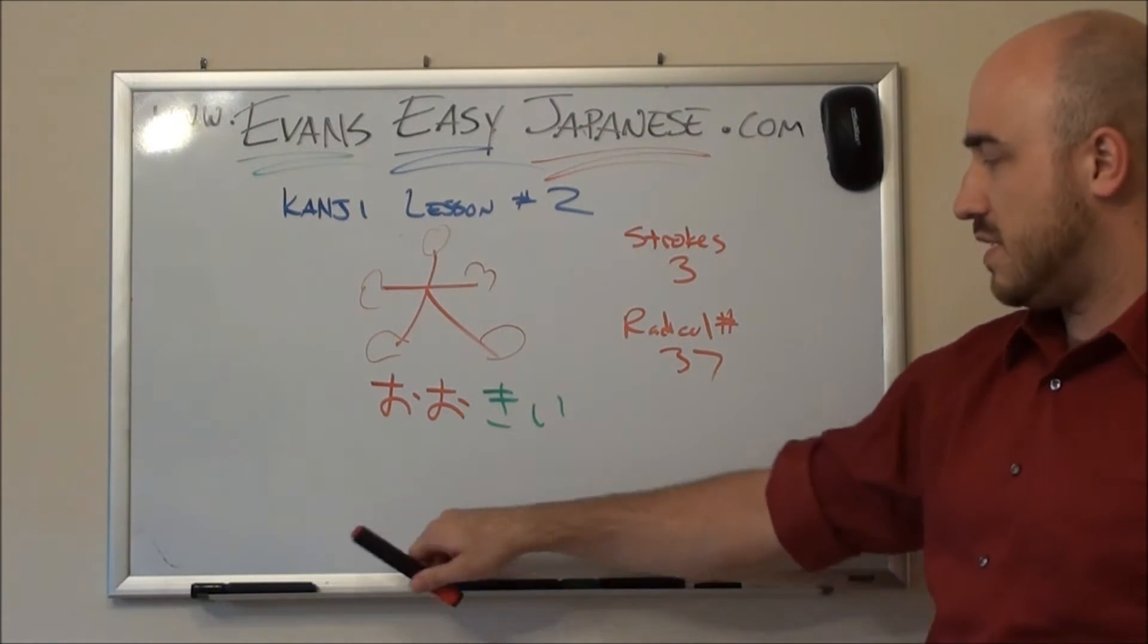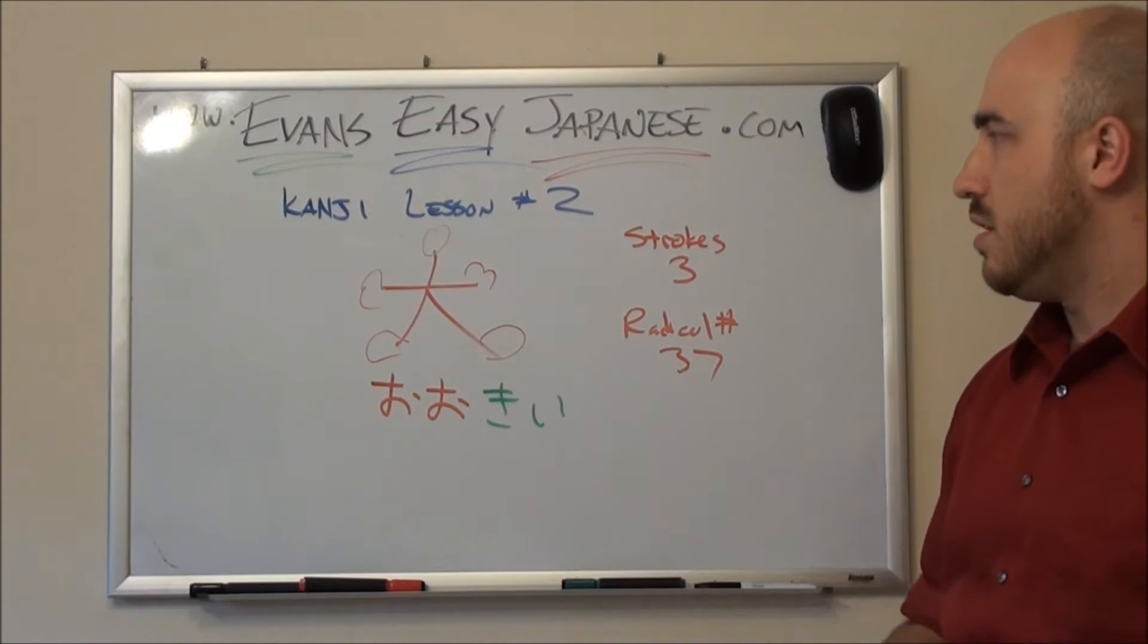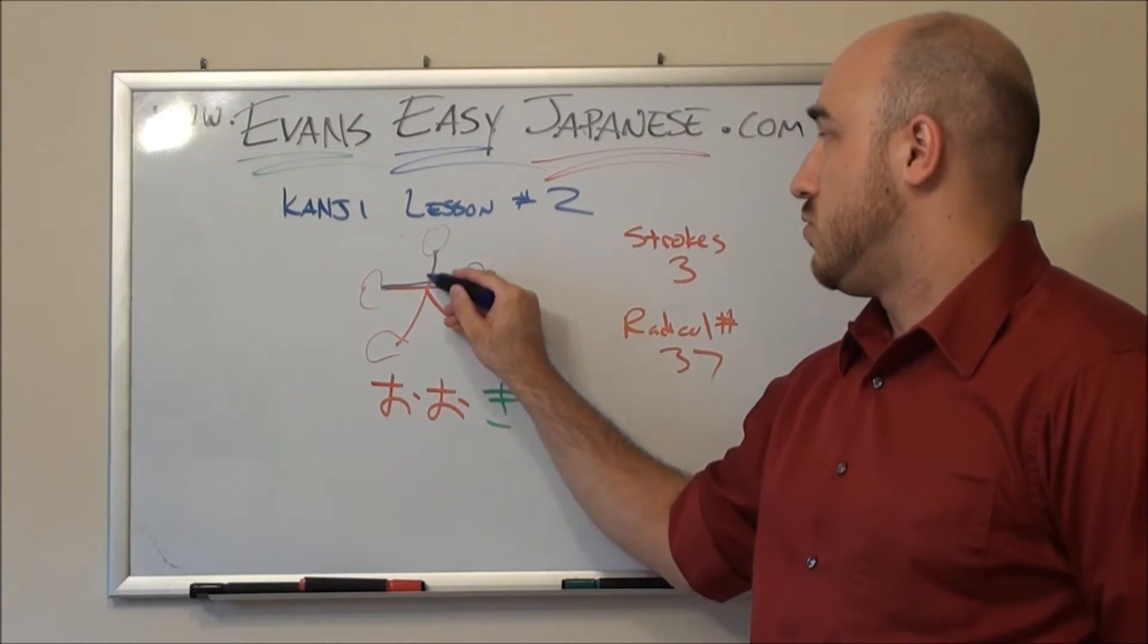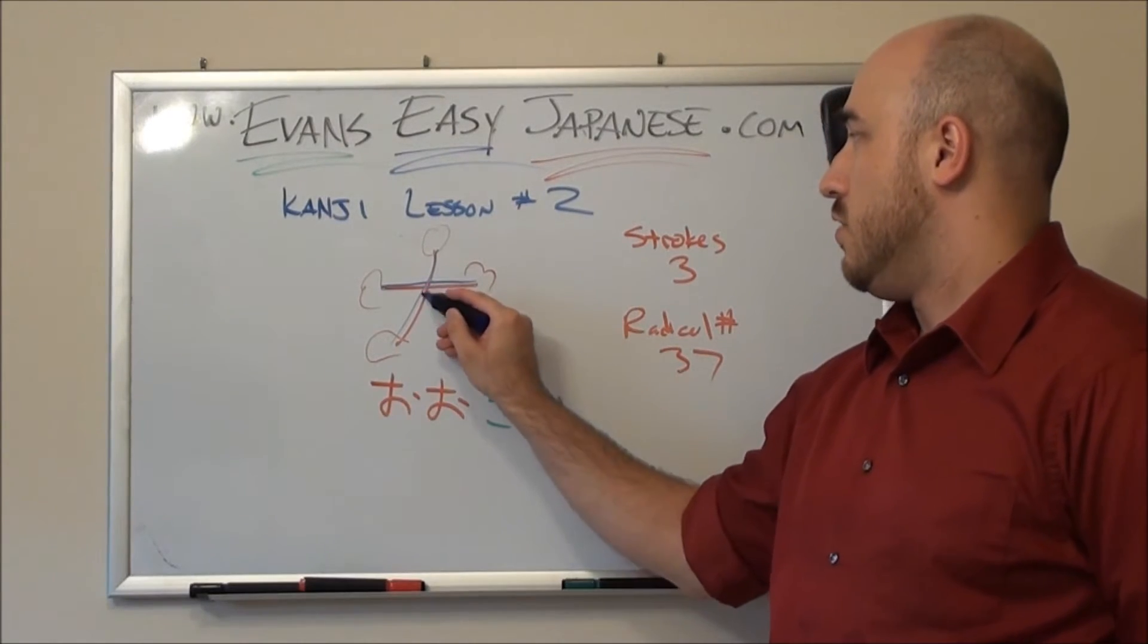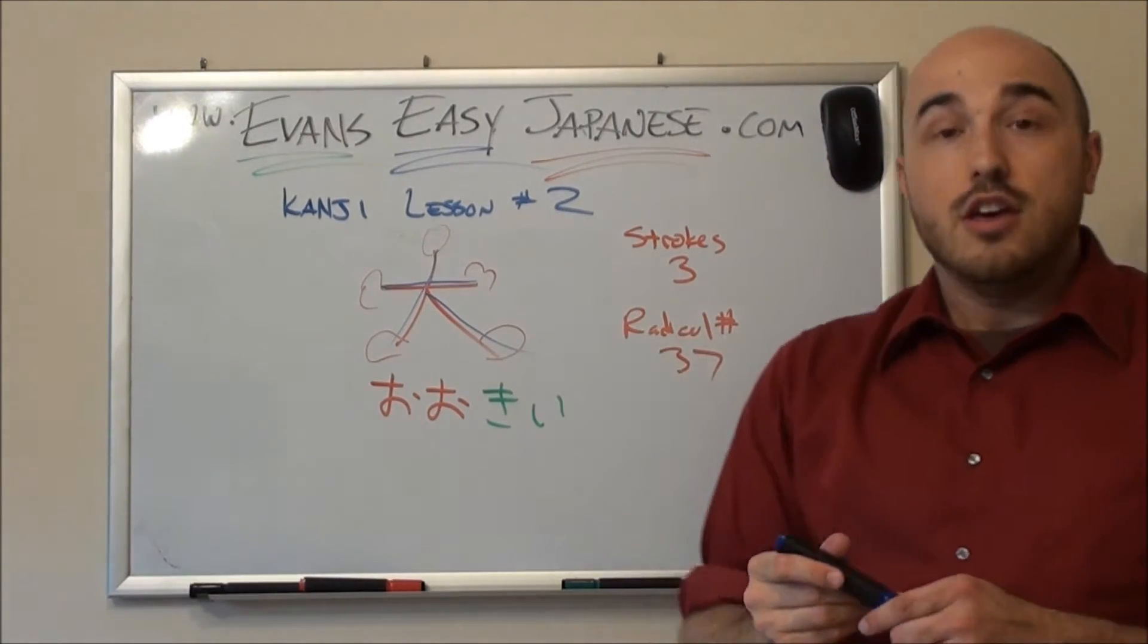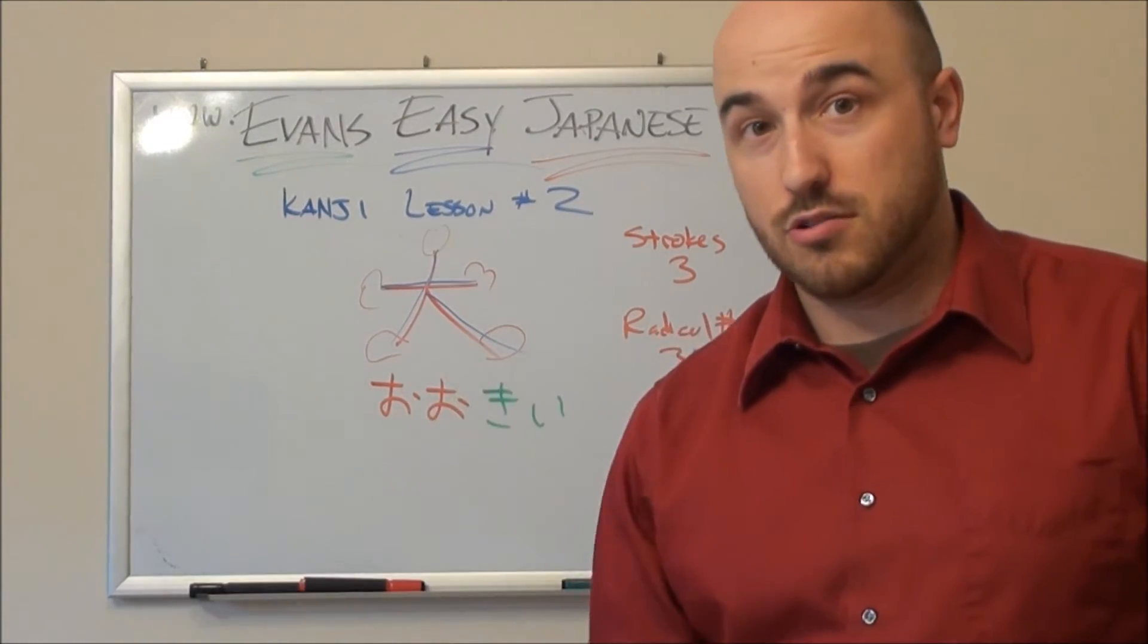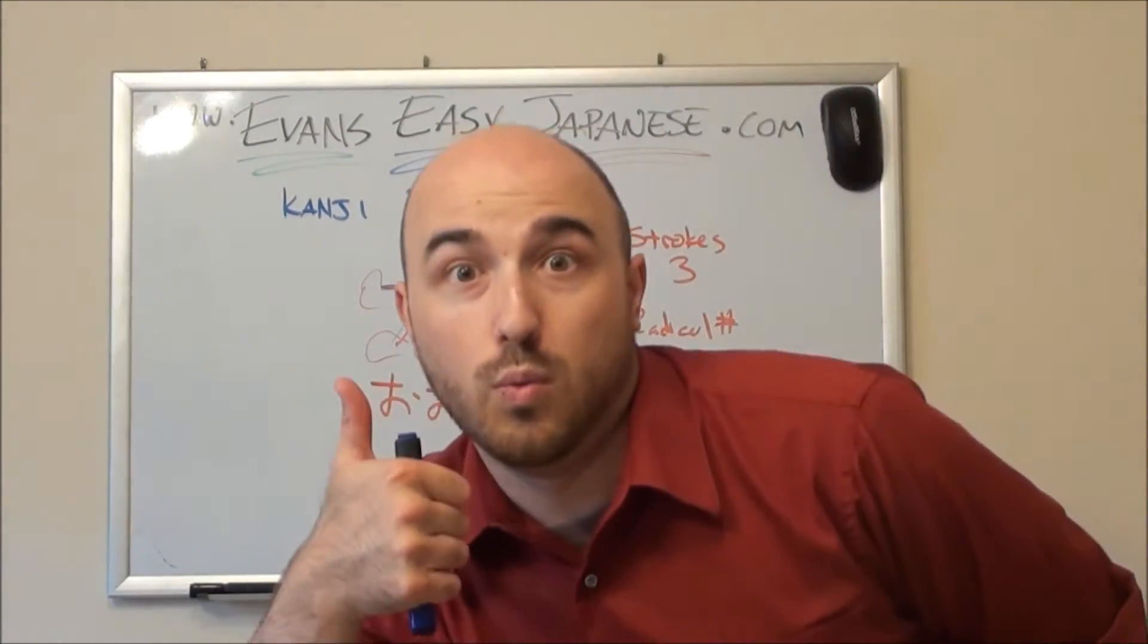It has three strokes and it is its own radical. It is a radical. It's the big radical. We're not going to worry about what the radicals are called yet. Radical number 37. Let's draw it out together, shall we? It's really easy peasy. I'll use a different color. Just draw over it. We got our one, two, three. Three strokes. It's a three-stroke kanji. Three-stroke radical, three-stroke kanji. Word.